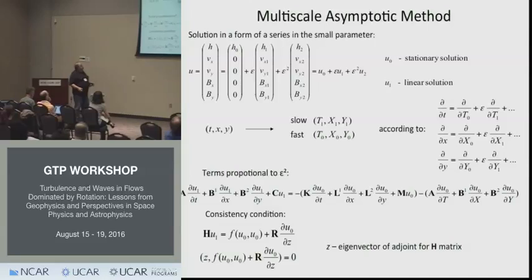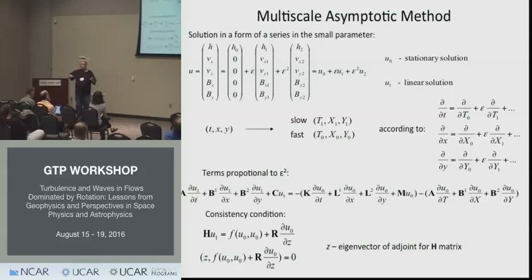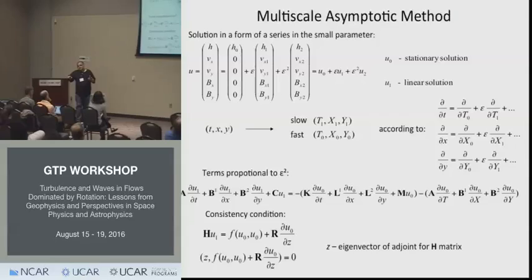To do this, we use the multiscale asymptotic method. You represent all quantities in asymptotic series and collect terms of the same order in epsilon. In first order in epsilon you get the linear solutions. At second order in epsilon, the asymptotic solution is not converging due to resonance effects, and you use traditional compatibility conditions to derive asymptotic solutions that are compatible on larger time and space scales.